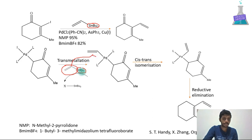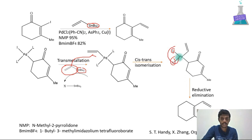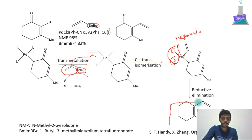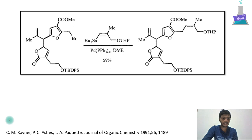After oxidative addition, transmetallation occurs in the presence of SnBu3, where iodine and the tin group are eliminated and replaced by the new group. Then cis-trans isomerization happens, bringing the two ligands from trans to cis position. Reductive elimination then couples the two compounds, regenerating palladium and forming the coupled product. NMP means N-methyl-2-pyrrolidine and BMIM-BF4 is 1-butyl-3-methylimidazolium tetrafluoroborate.